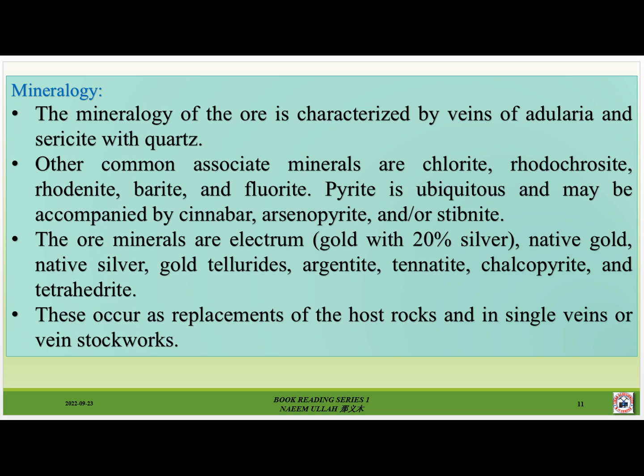Mineralogy. The mineralogy of the ore is characterized by veins of adularia and acanthite with quartz. Other common associated minerals are chlorite, rhodonite, alabandite and fluorite. Pyrite is ubiquitous and may be accompanied by cinnabar, arsenopyrite and/or stephanite. The ore minerals are electrum (gold with 20% silver), native gold, native silver, gold tellurides, argentite, tenorite, chalcopyrite and tetrahedrite. These occur as replacements of the host rocks and in single veins or vein stockworks.